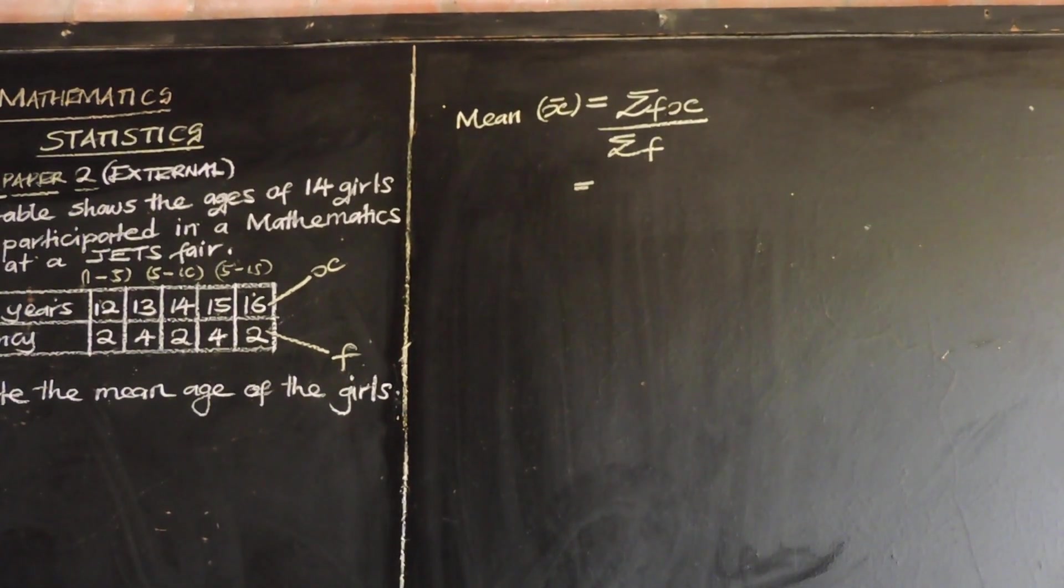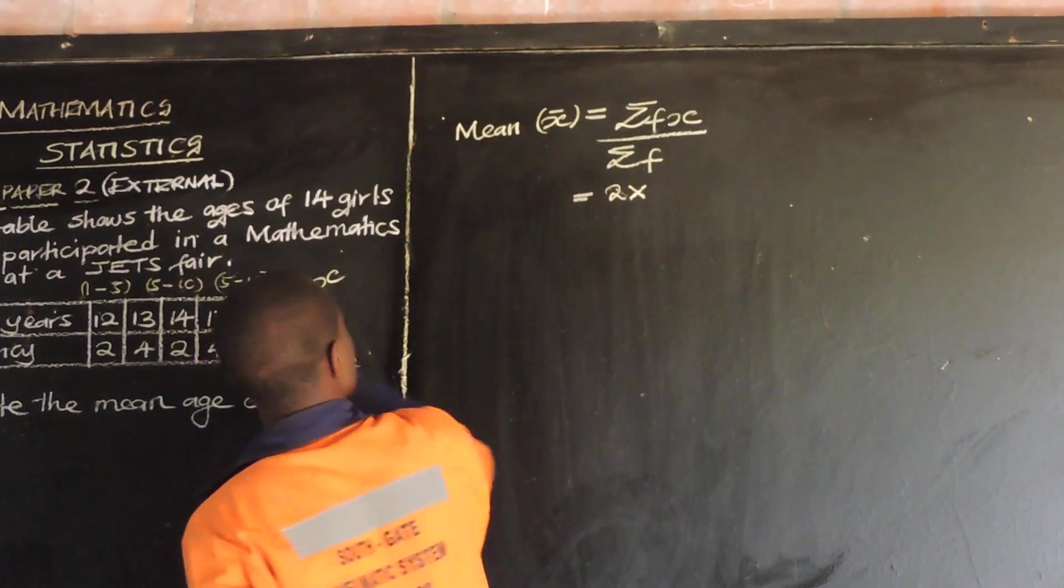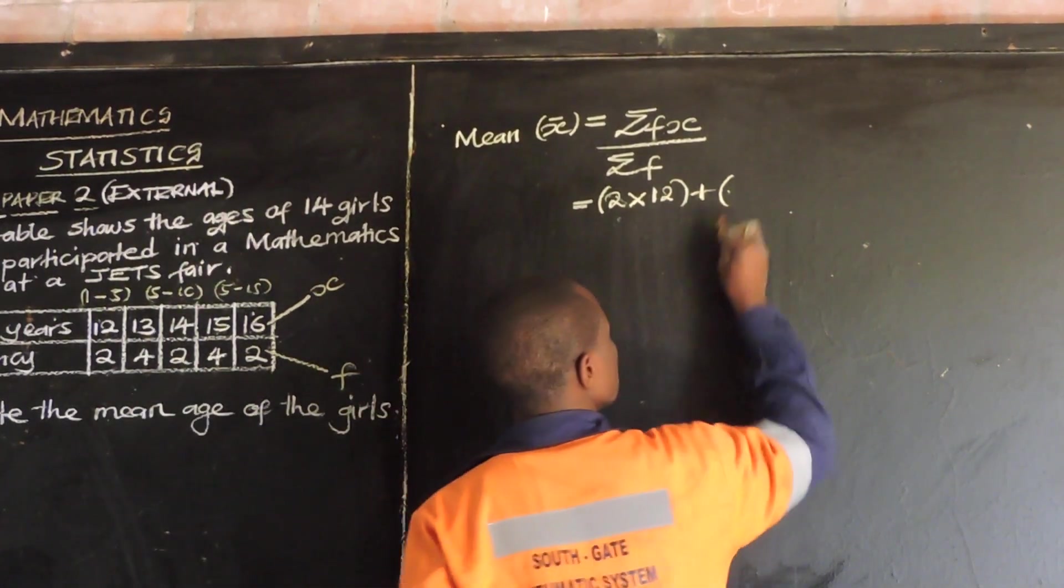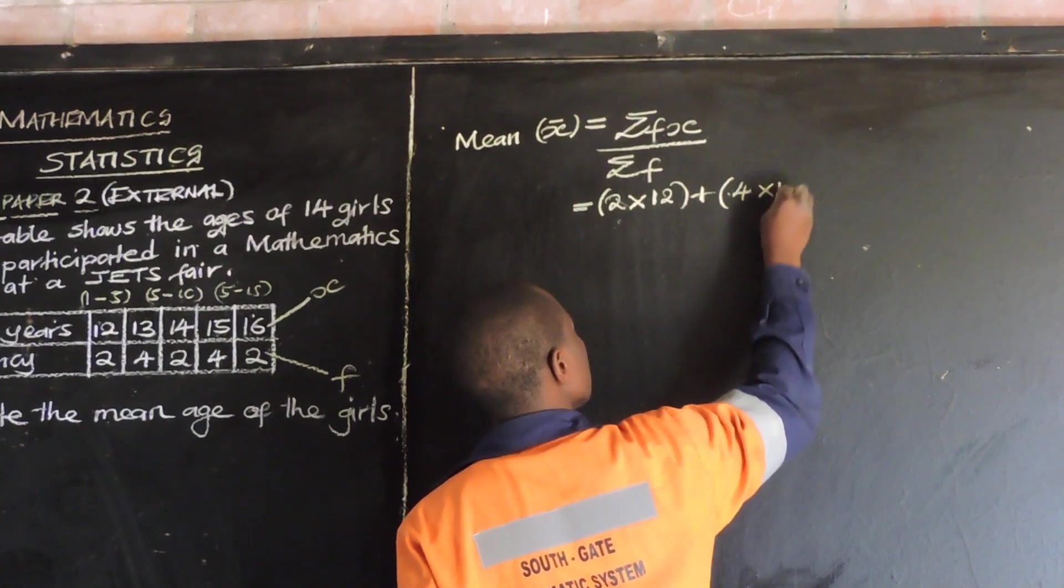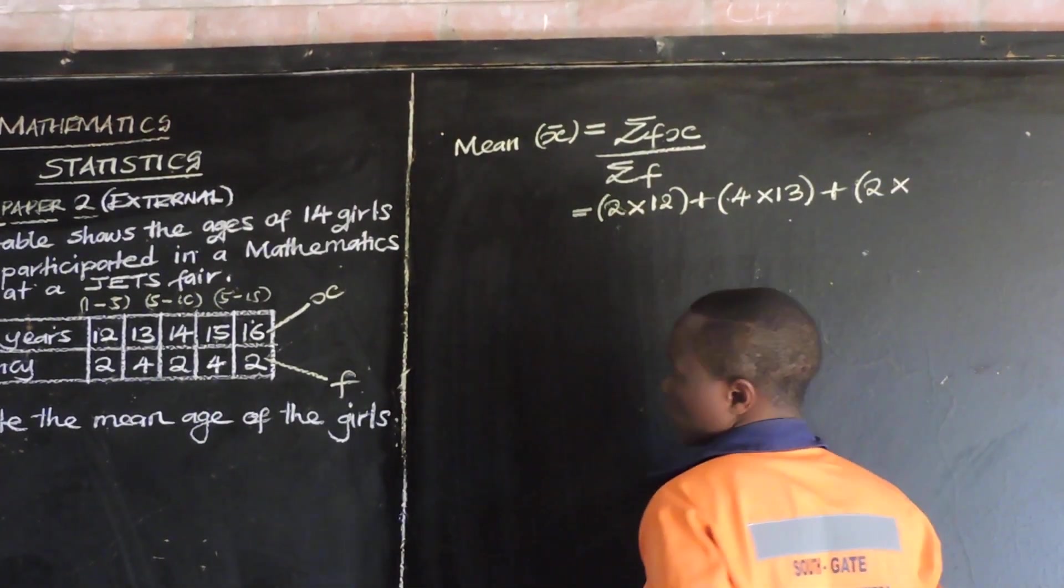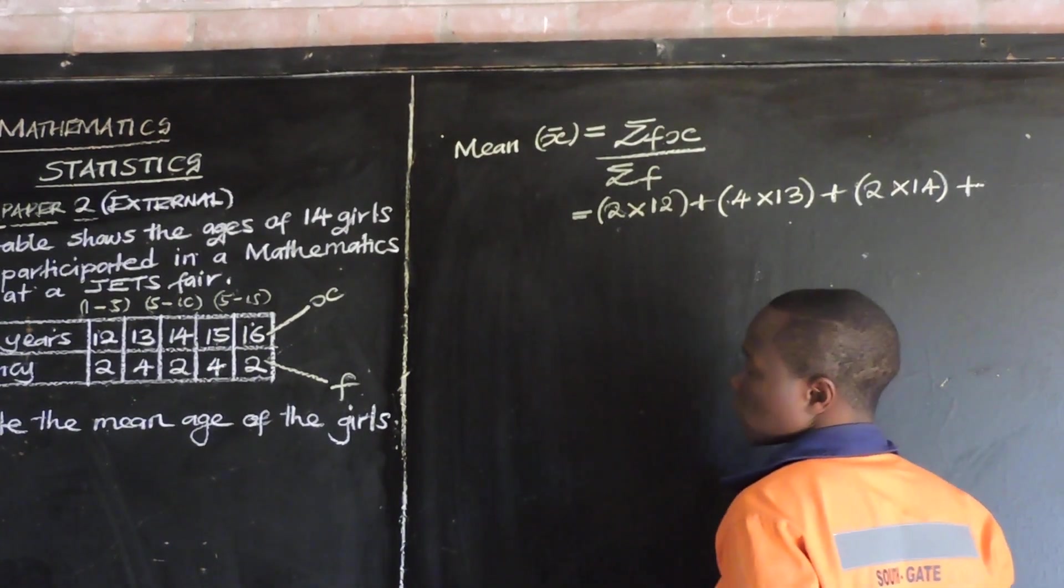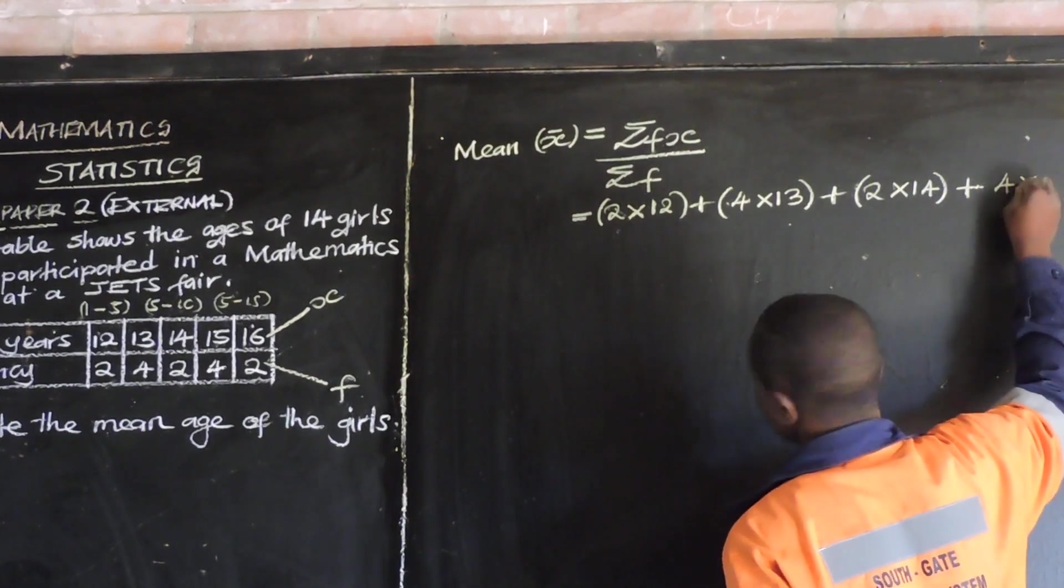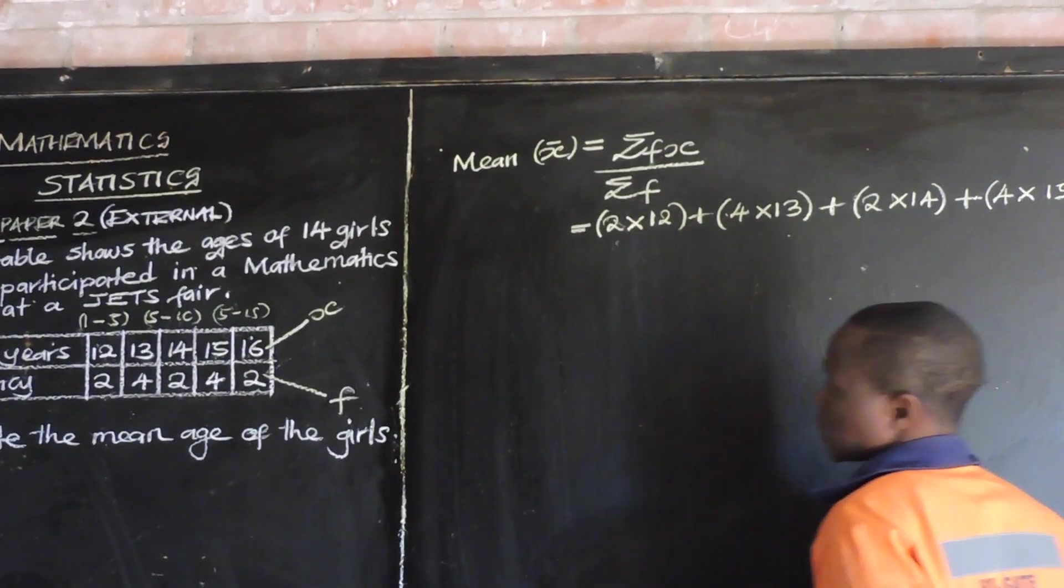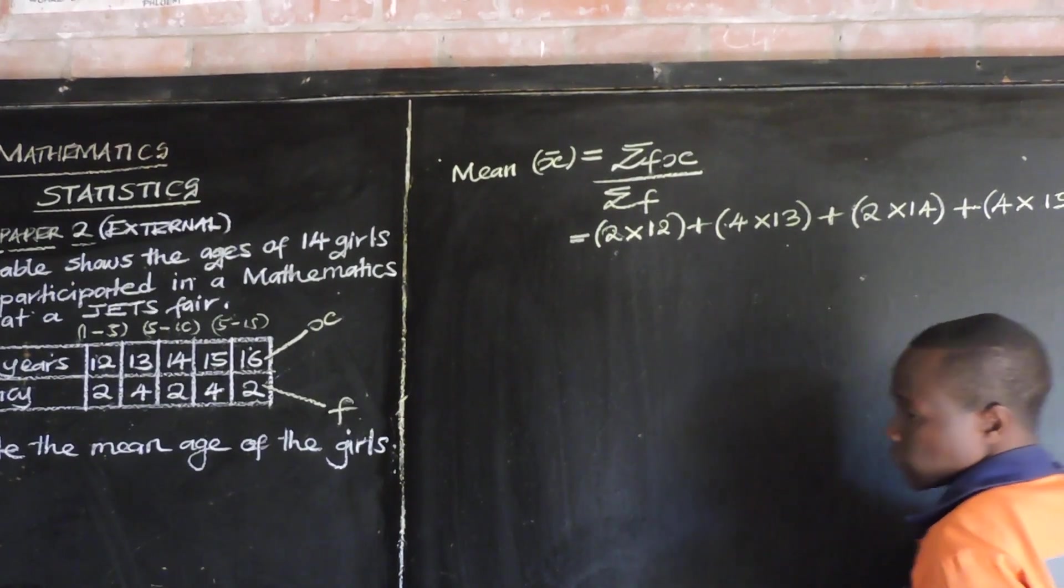So again, I'll substitute in that formula and move on. So our first frequency is 2. So when we say 2 multiplied by our x, it's 12. Plus, then our second frequency is 4. So it's 4 multiplied by 13. Plus, then our third frequency is 2. So we say 2 multiplied by its corresponding x, 14. Plus, our fourth frequency is 4. So we say 4 multiplied by its corresponding x, 15. Plus, the last frequency is 2, 2 multiplied by its corresponding frequency, 16.